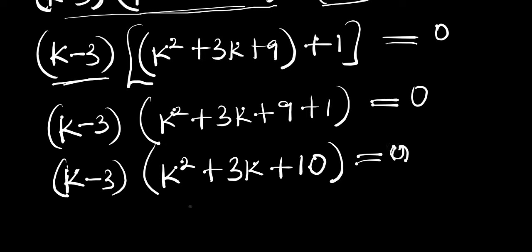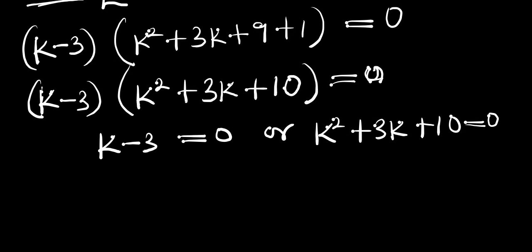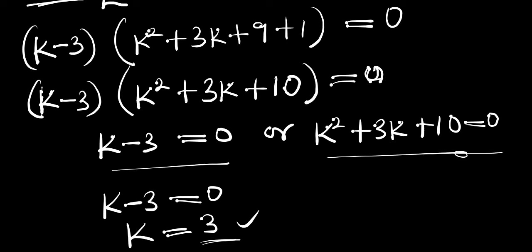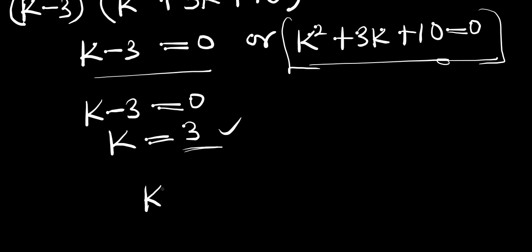At this point we have two equations: k minus 3 equals zero, or k squared plus 3k plus 10 equals zero. Starting with the linear equation, k minus 3 equals zero gives k equals 3, which is the real solution. Now we solve the quadratic equation to find the other solutions: k² plus 3k plus 10 equals zero.